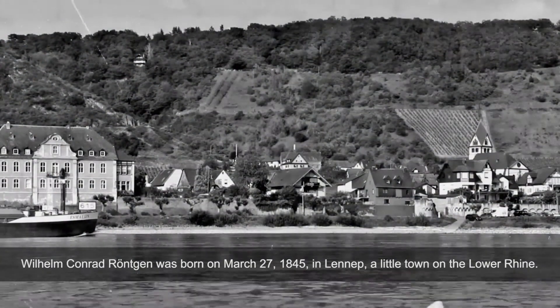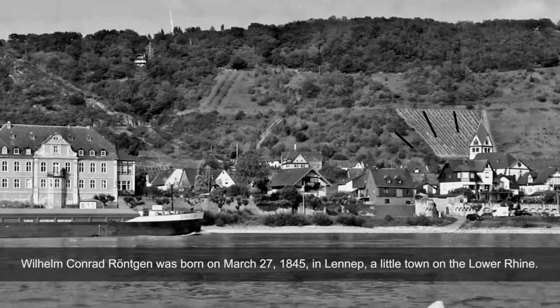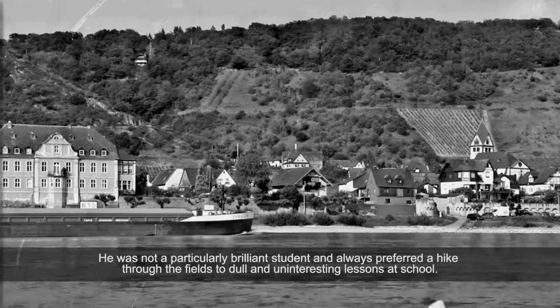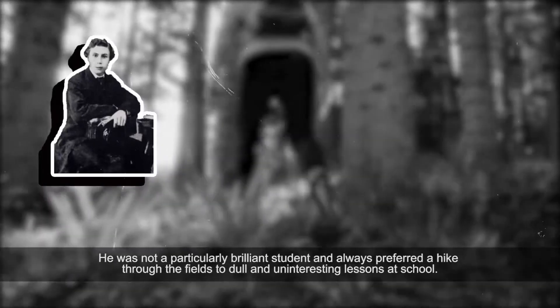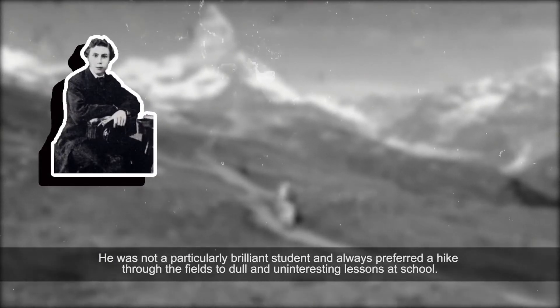Wilhelm Konrad Röntgen was born on March 27, 1845, in Lennep, a little town on the lower Rhine. He was not a particularly brilliant student and always preferred to hike through the fields to dull and uninteresting lessons at school.